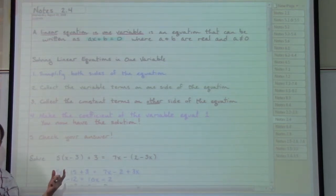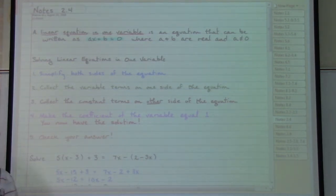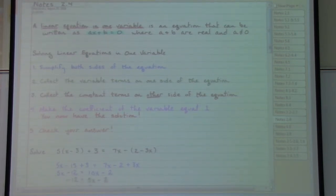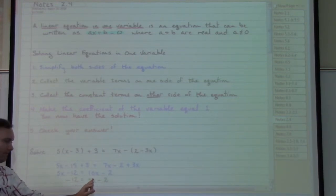In order to move that, the opposite of a positive 5x is going to be a minus 5x. That leaves me with a negative 12 on the left hand side. 10x minus 5x gives me the 5x in green and the negative 2 which is still there.